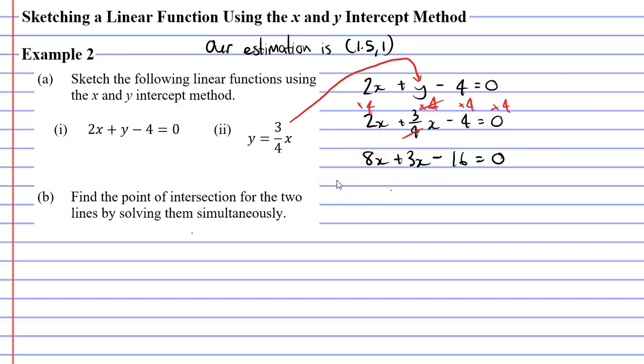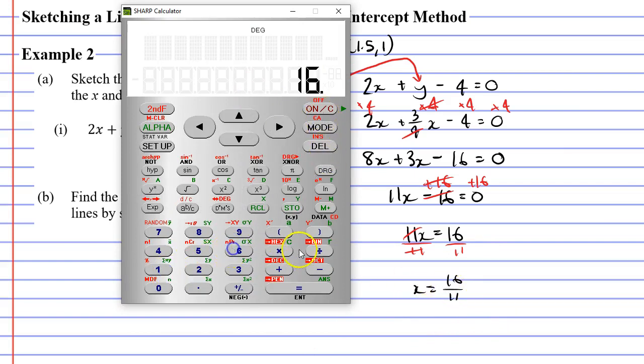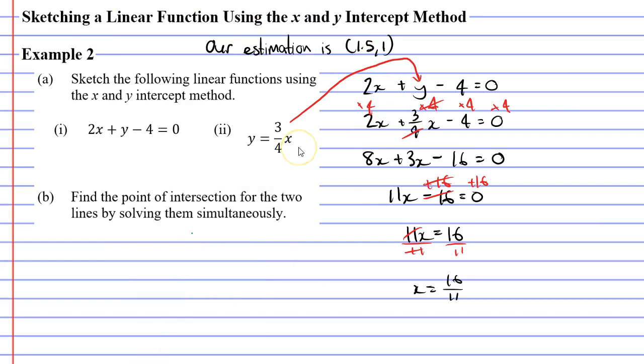8x plus 3x is 11x, so I get 11x minus 16 equals 0. Now I'm going to add 16 to both sides of the equation. This will cancel the minus 16 leaving me with 11x equals 16. Finally I'm going to divide both terms by 11 to isolate x, giving me x equals 16/11. Markers prefer you to leave it as a fraction. If we wanted to convert this to a decimal, 16 divided by 11 gives us 1.45 continuous.